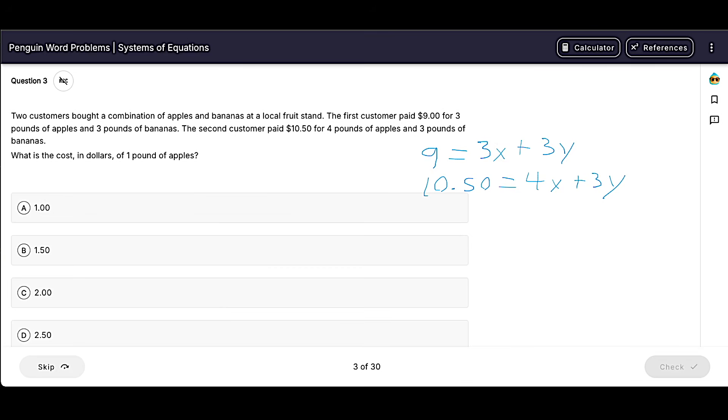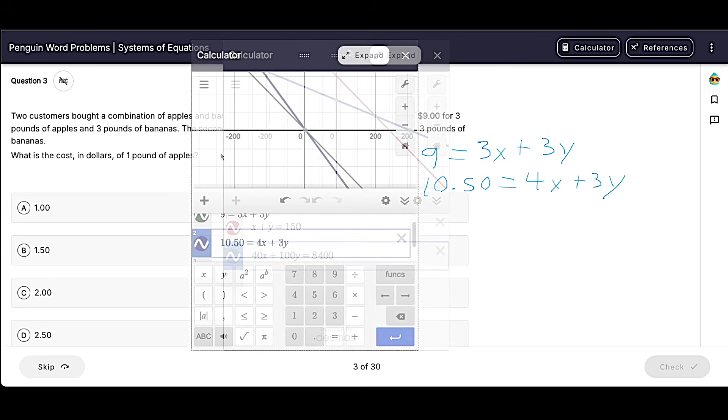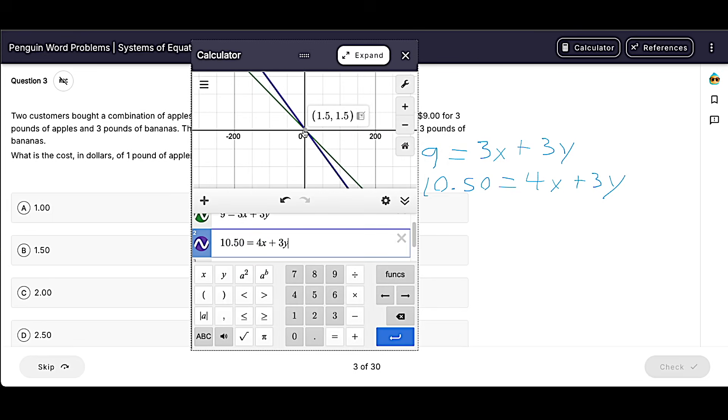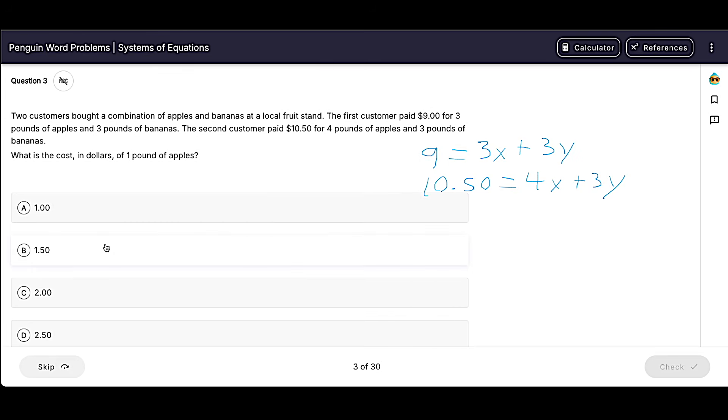And it looks like regardless, they're both going to cost $1.50. So our answer is going to be choice B here, $1.50.